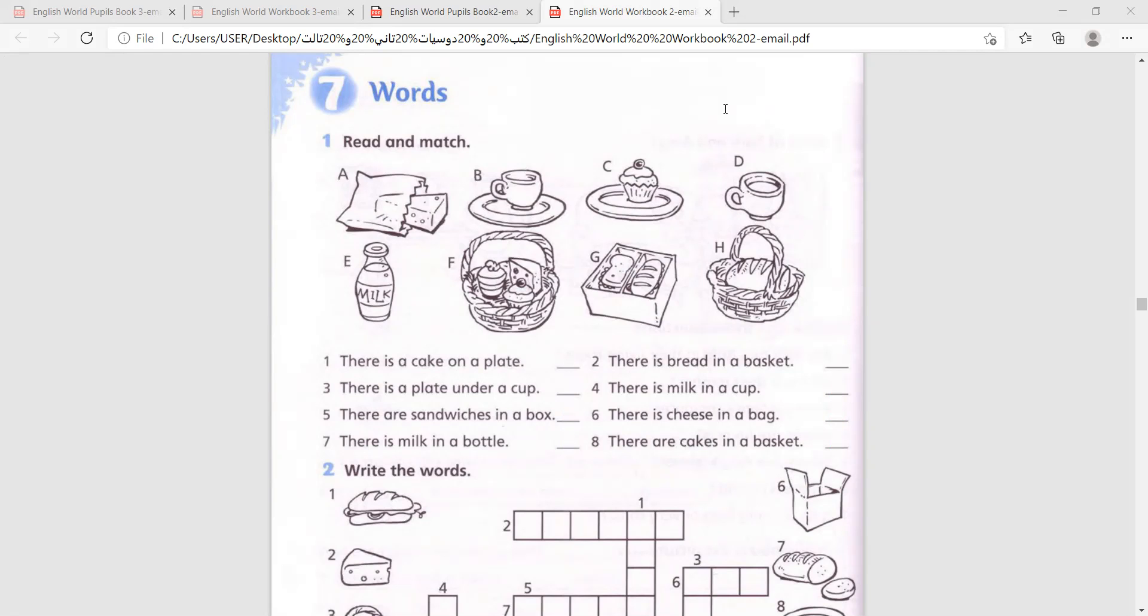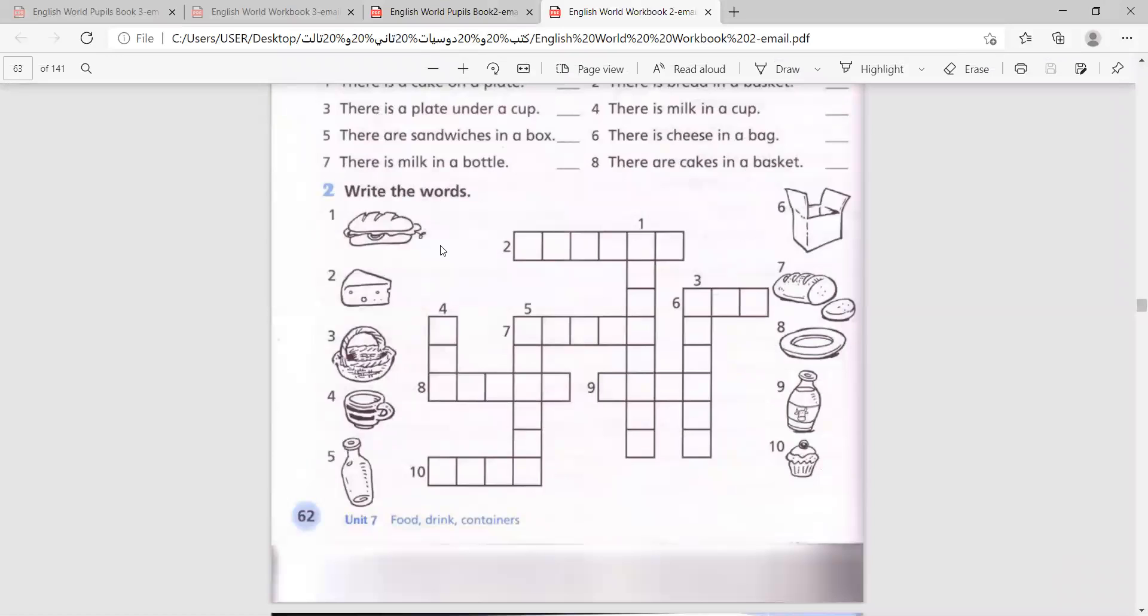Now let's move on to question number two, which is also like a game. It's lovely. Write the words. Now, grade two, those are crosswords. Some letters will be integrated with other words. Some words will share the letters. So let's take a look at the pictures.